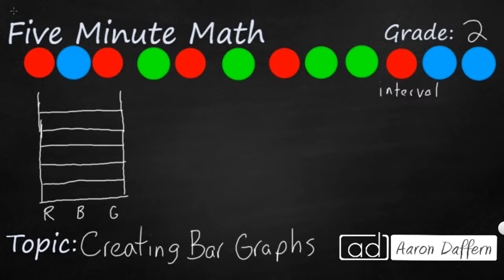All I need now are my numbers. So remember, our interval is 1. So you always start with 0 down at the bottom. And the interval of 1 simply means you count by 1s. So 1, 2, 3, 4. We'll put 5 and 6 up at the top.